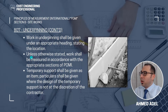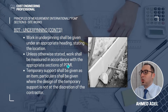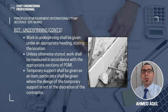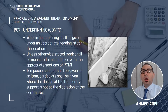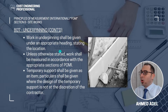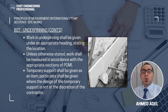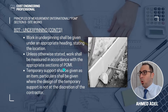Point number two: unless otherwise stated, work shall be measured in accordance with the appropriate sections of POMI. As per POMI, you have many sections, and under these sections the items will come. POMI is telling you how to measure these items or these works. All works associated with underpinning should be measured in accordance with how these items should be measured per POMI.